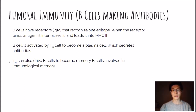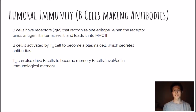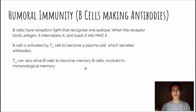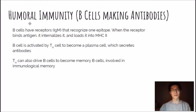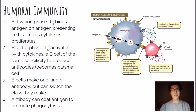B cells can also make secondary memory B cells that stay in reserve. If an infection comes in later — maybe a year later with that same virus — your body will recognize it because of these memory B cells and go target it very quickly. That's the overview of the humoral immune system. Let's go through it in a little bit more detail.